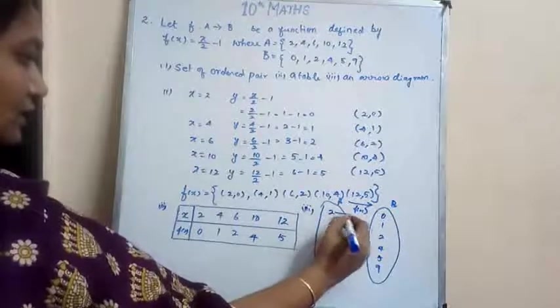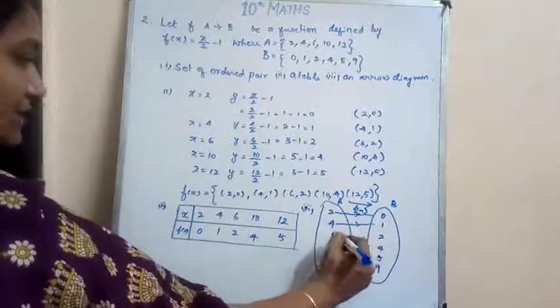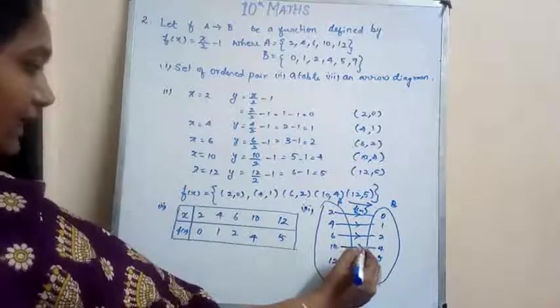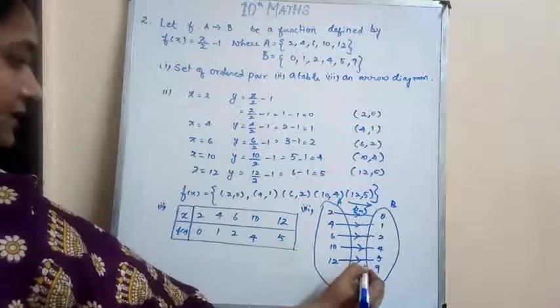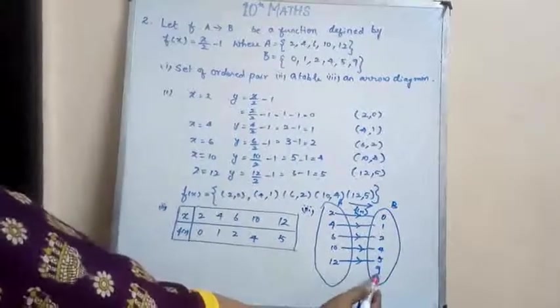So 0 becomes, sorry, 2 becomes 0, 4 becomes 1, 6 becomes 2, 10 becomes 4, and 12 becomes 5. So 9 is left over, okay.